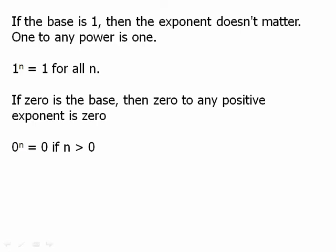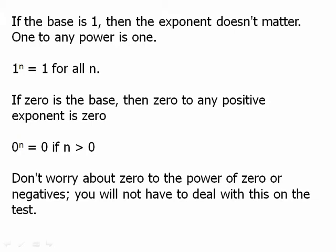If zero is the base, then zero to any positive exponent is zero. 0^n = 0 if n > 0. And in fact, this is true not only of positive integers, it's also true of positive fractions. It's true of everything to the right of 0 on the number line. Don't worry about zero to the power of zero or negatives; you will not have to deal with this on the test. That gets into either illegal mathematics or other forms of mathematics that we don't need to worry about. So that's just going to be something we can ignore.